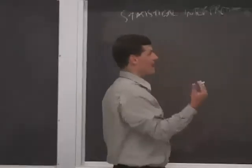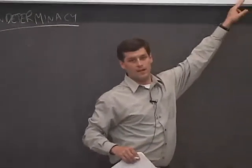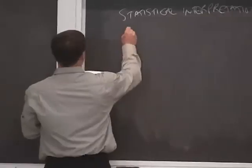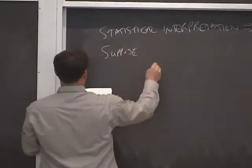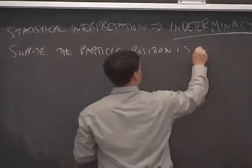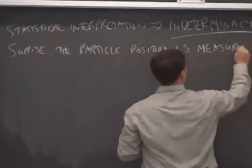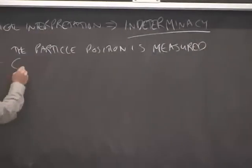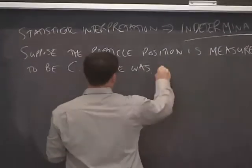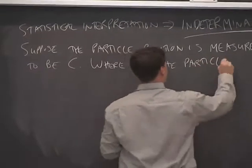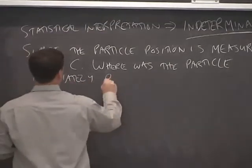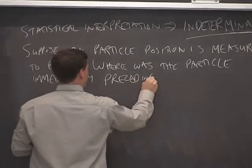Which then begs the question, if we take a measurement and we find the particle to be at point C, where was the particle immediately preceding that measurement?